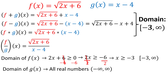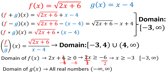For f divided by g of x, we have the additional restriction that g(x) cannot equal 0. The denominator equals 0 when x = 4, so x cannot equal 4. We have two restrictions: x ≥ −3 and x ≠ 4. In interval notation, this is written as [−3, 4) ∪ (4, ∞).